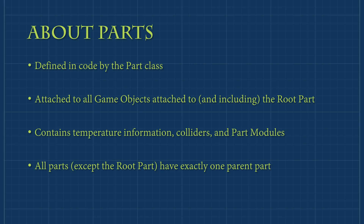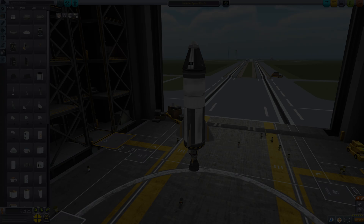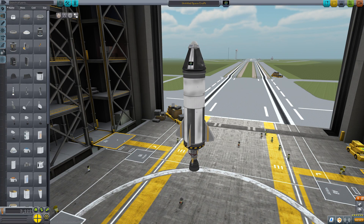Just like Vessel, there is a Part class which is also a component, attached to every game object linked directly or indirectly with the root part, as well as the root part itself. The Part class holds information such as internal and skin temperatures, colliders, and contains a list of classes called part modules. Note that, with the exception of the root part, all parts have one and only one parent part. For example, in a simple rocket the player would place the pod first, making it the root part. Directly attached to it are a fuel tank and a parachute — the pod is the parent of these two parts. Attached to the fuel tank are four fins and an engine, making the tank their parent. All of these parts are managed by the Vessel component attached to the pod.